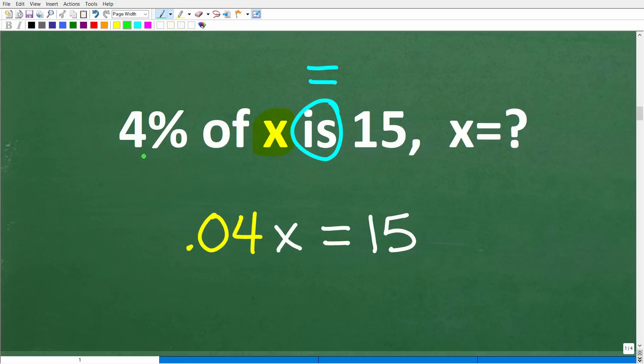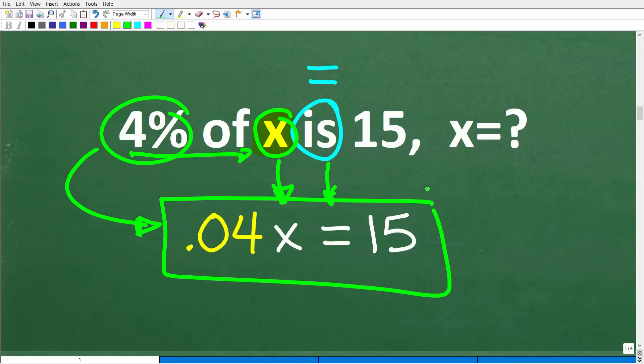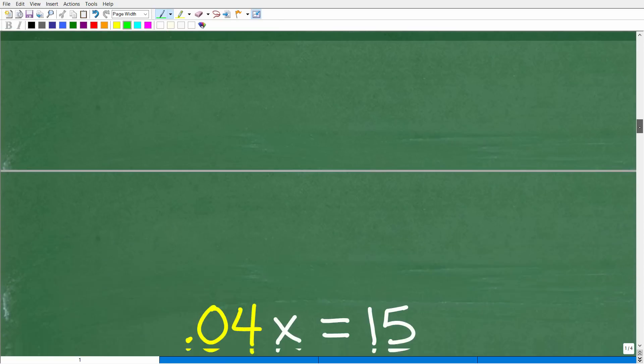So, 4% of x. So, I have some number. What's 4% of this number? Well, I don't know what the number is, but I know that I have to change this to a decimal, 0.04, and multiply it by that number. So, algebraically, that would look like this. 0.04 times x is or is equal to 15. So this is the equation that we need to solve, and when we solve this equation for x, we will have the right answer.